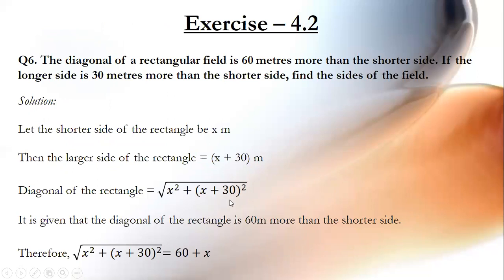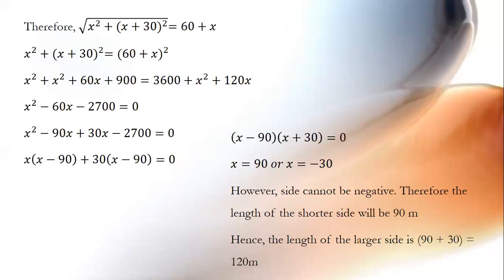So the diagonal equals the square root of x squared plus (x plus 30) squared. It is given that the diagonal is 60 meters more than the shorter side. Therefore, the square root of x squared plus (x plus 30) squared equals x plus 60. Taking squares on both sides, we have x squared plus (x plus 30) squared equals (x plus 60) squared.